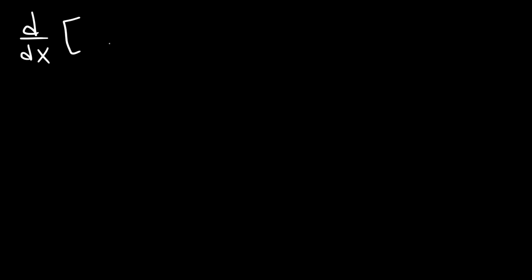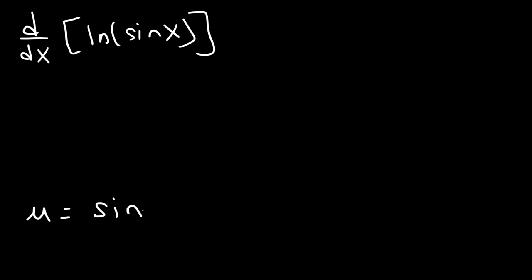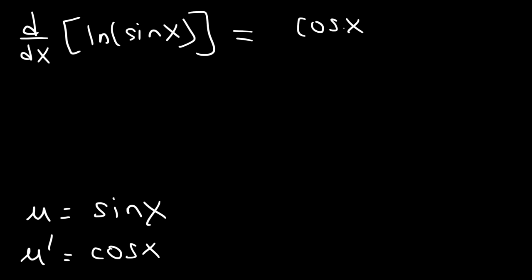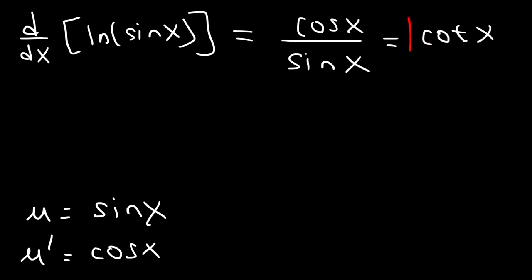Now let's try some harder problems. Go ahead and find the derivative of the natural log of sine x. In this example, u is equal to sine x, and u prime — the derivative of sine — is going to be cosine. So it's u prime over u, which is cosine divided by sine. Cosine over sine is cotangent, so the derivative of the natural log of sine x is cotangent x.